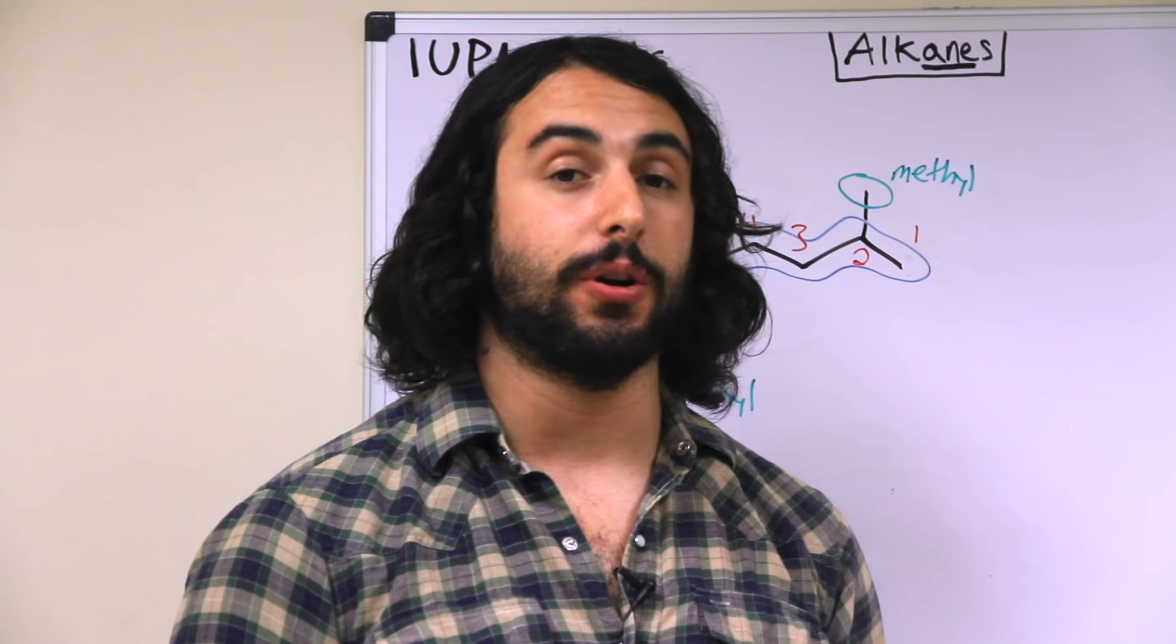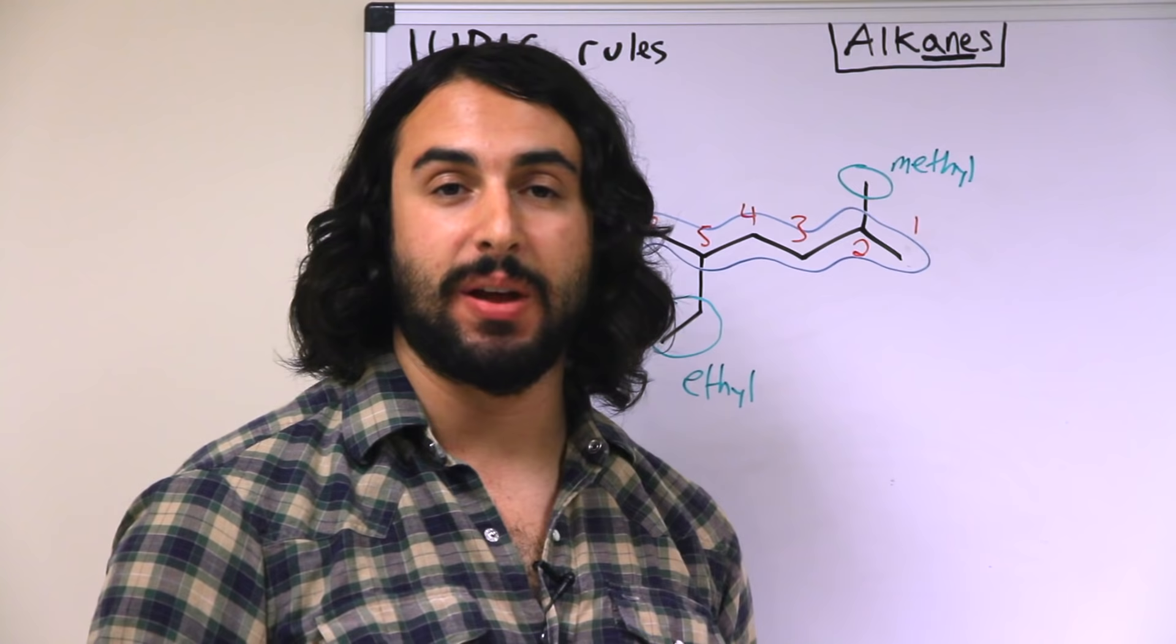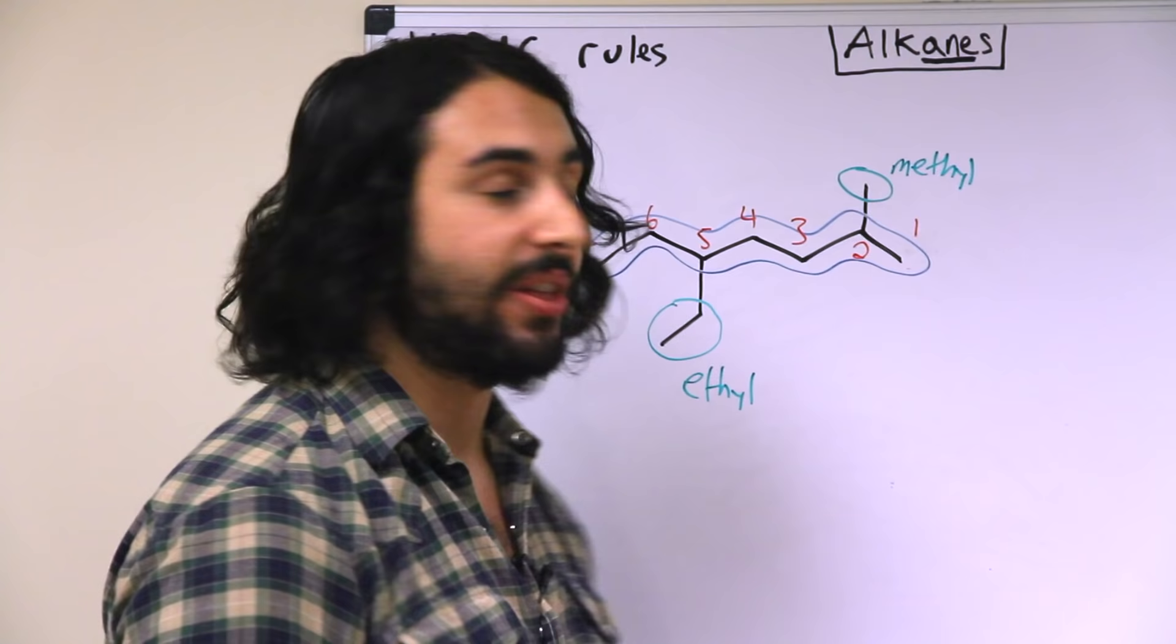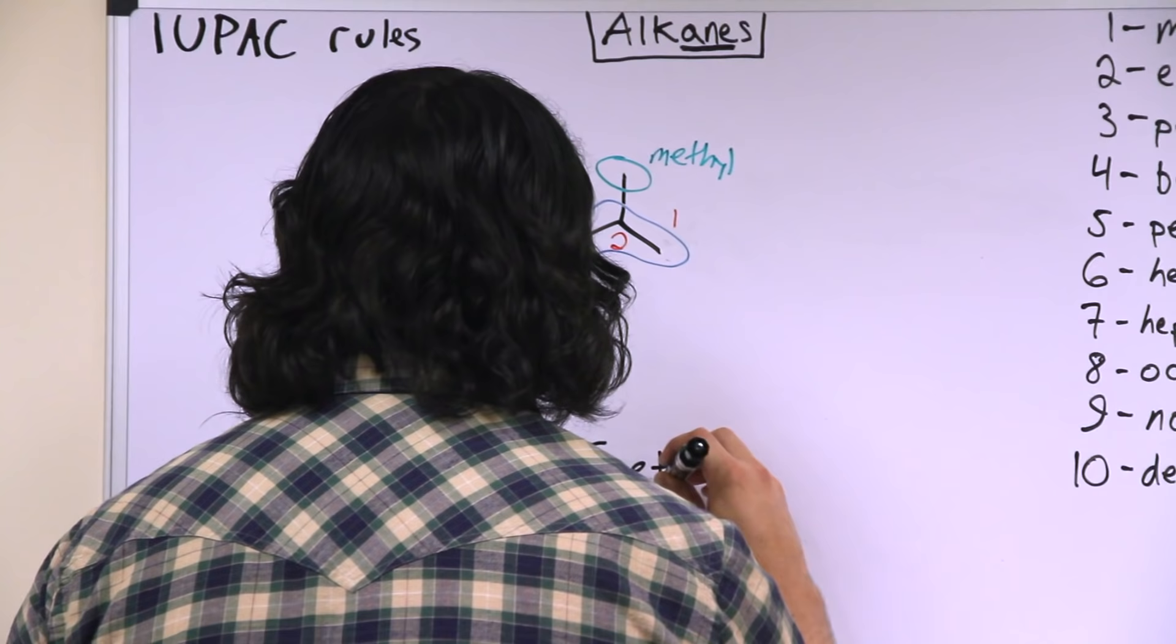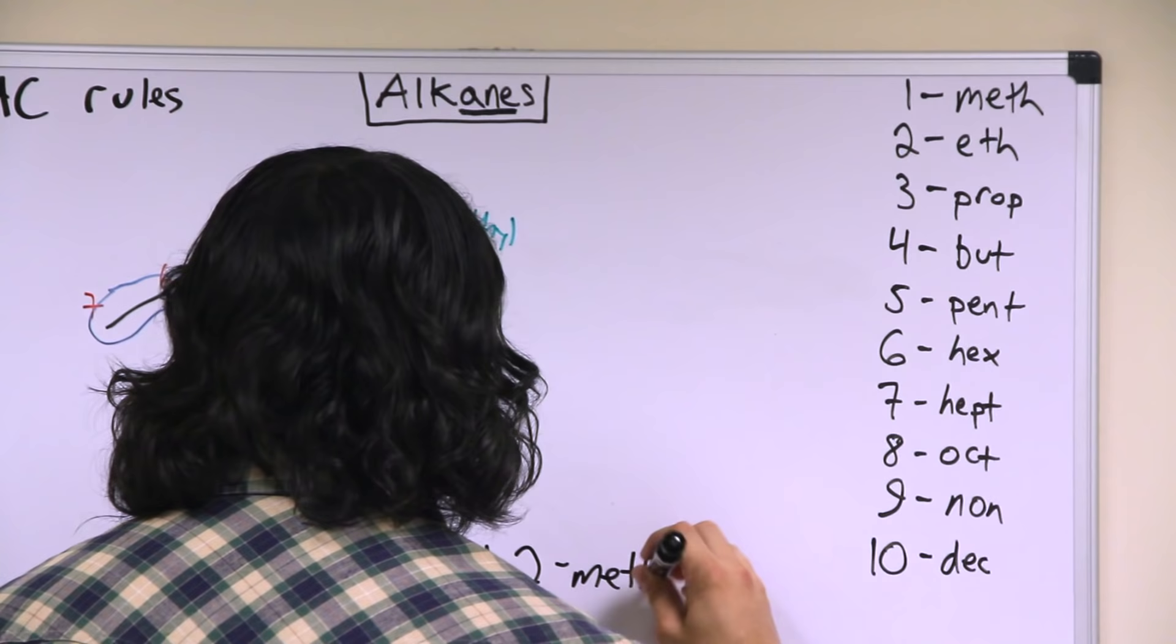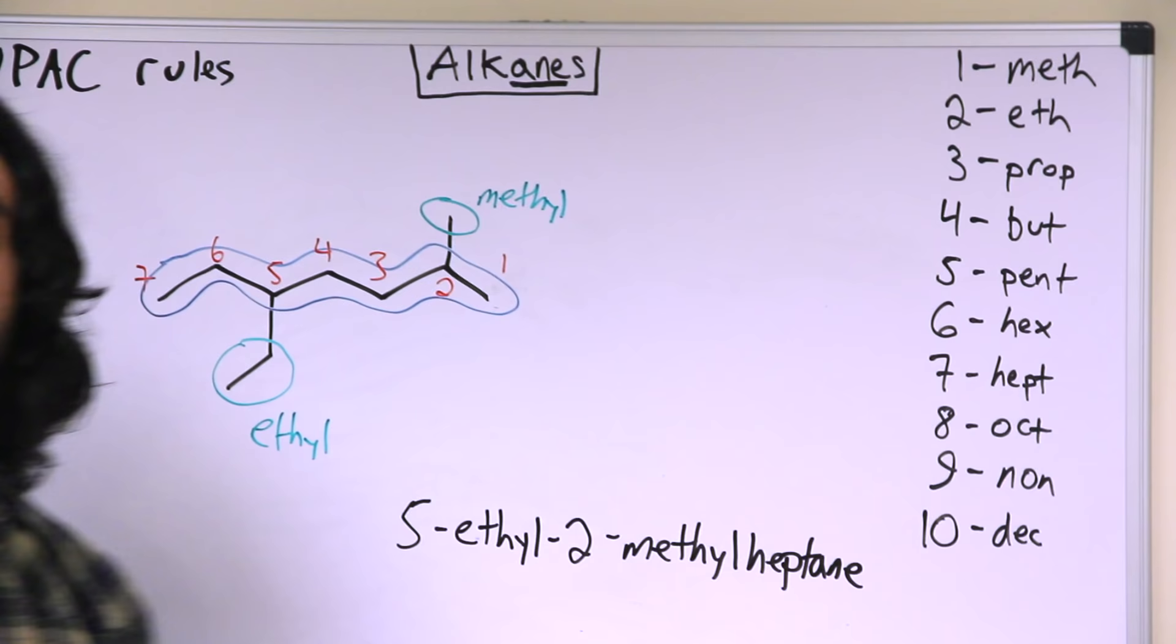We are going to have to list these in alphabetical order. Ethyl starts with E, methyl starts with M, and for that reason alone we are going to list the ethyl group first on the carbon that it occurs. So that is 5-ethyl-2-methyl-heptane.